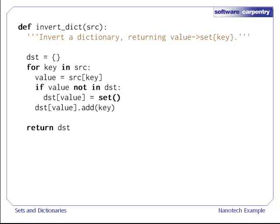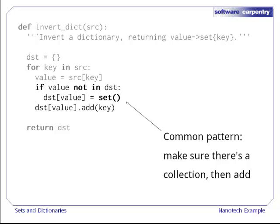And here's our function to invert a dictionary. For each key value pair in the source dictionary, we use the value as the key in the new dictionary and the original key as the value. Here, we're relying on another common pattern. When the values in a dictionary are some kind of collection, such as a set or a list, we store an empty collection of that kind with the key if the key isn't already present, so that we can add our new value whether the key was previously present or not.